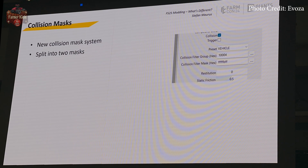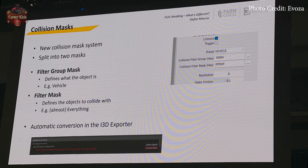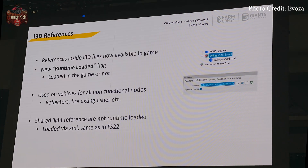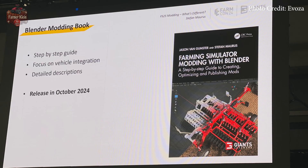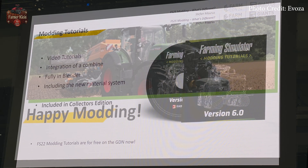Collision maps are updated and split into two different types: one defines the object — a vehicle, for example — and the other defines what the object will collide with, in this example everything. This opens up quite a few use cases where select things collide with one subset of items but not others. Changes to i3d references allow flagging something as loaded at runtime or not, which will be used on vehicles for things like reflectors or fire extinguishers. In October, Giants plans to release a new book focusing on modding with Blender, and the new version of modding tutorials will also be released with the Collector's Edition. The current FS22 modding tutorials are available on the Giants Developer Network.